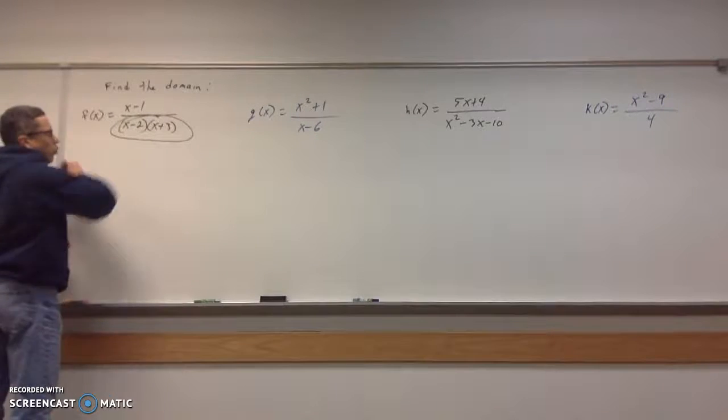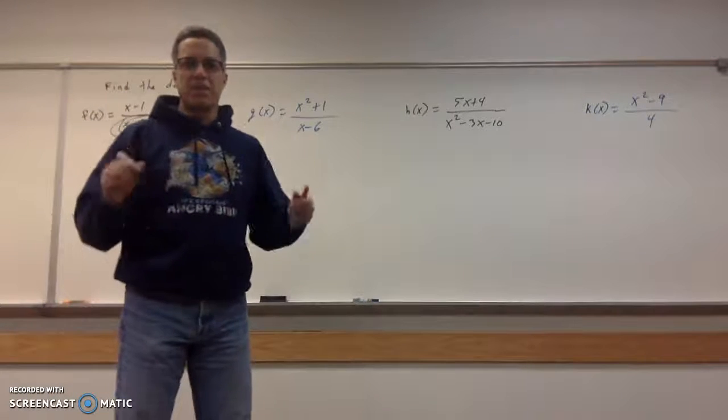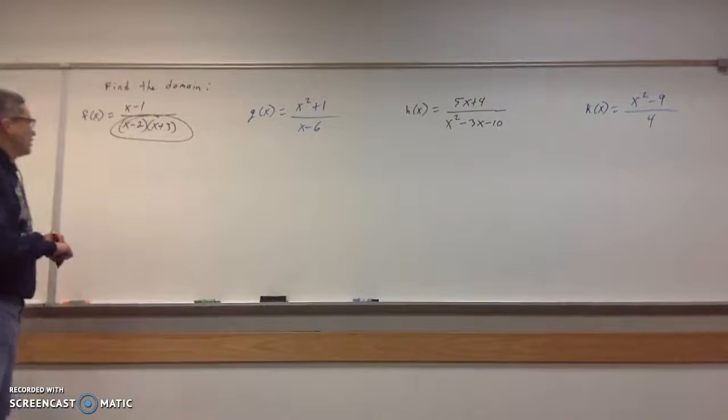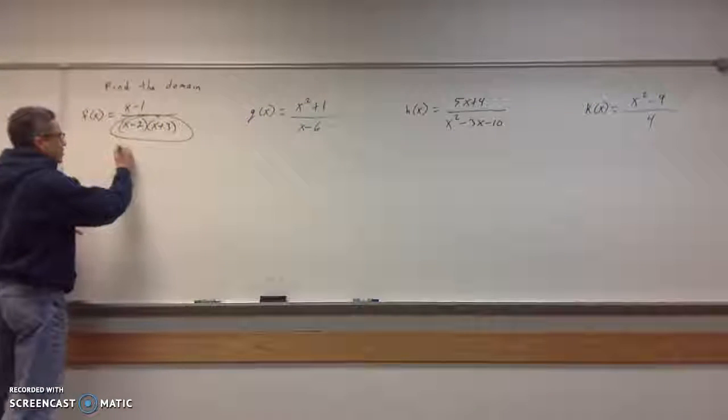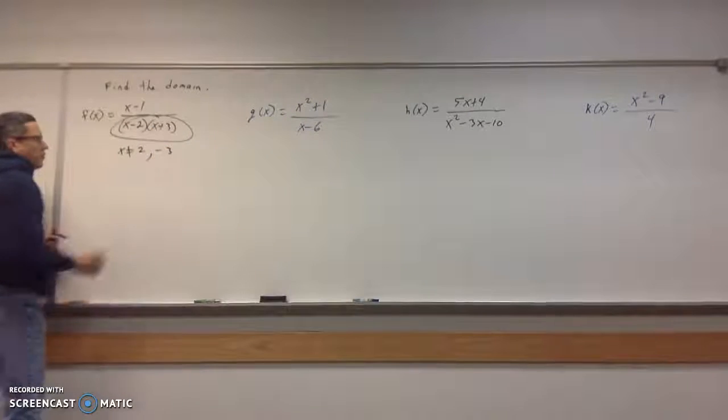When you look at fractions, what can the denominator not be? It can't be zero, right? And that's what I'm after here. What will make these guys go to zero? Well, it can't be 2 and it can't be negative 3, right?